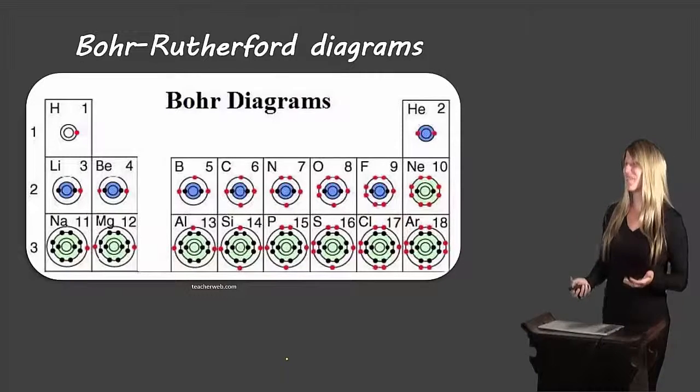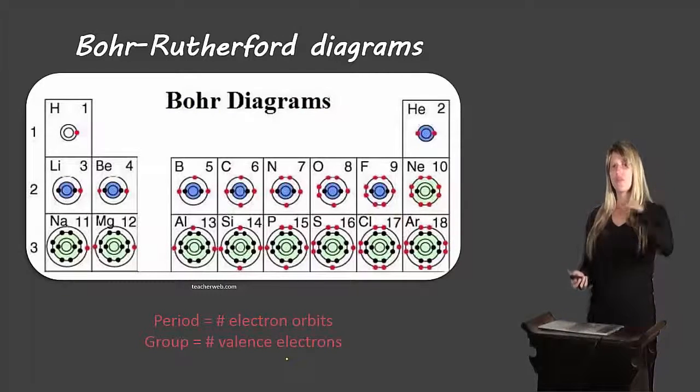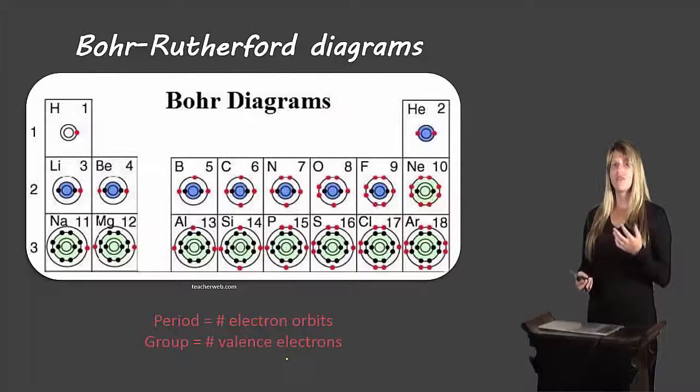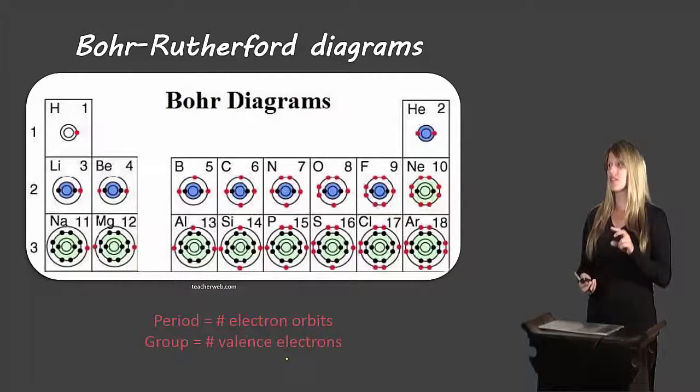Did you find the pattern? I hope so. So the pattern is that the period, which has to do with the row, tells us how many electron orbits there are. So in that first period where it says one and then hydrogen across, there's only one orbit. In the second period, lithium across, there are two orbits. And then in the third there are three.